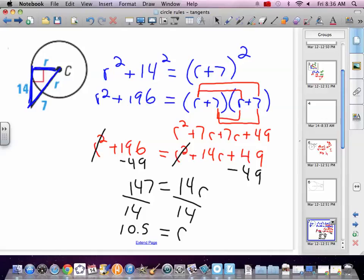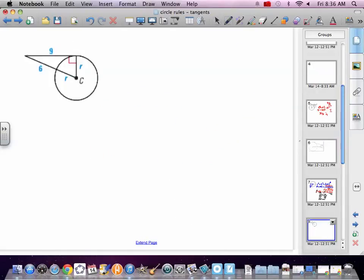Let's do one more. Like that. So, it is tangent. So, find R. So, again, the leg. R squared. The other leg. Again, the legs make up the right triangle. Make up the right angle. 9 squared. Equals R plus 6. Quantity squared.